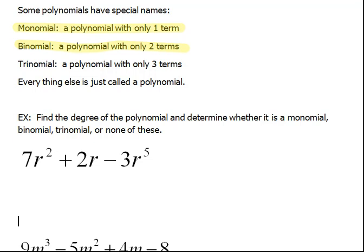And a trinomial would be a polynomial with three terms. There again, that prefix is telling us all. A trinomial, 3, tri meaning 3, triangle, tricycle, binomial meaning 2, bicycle, biannual, those types of things. Anything else is just called a polynomial with no special name.